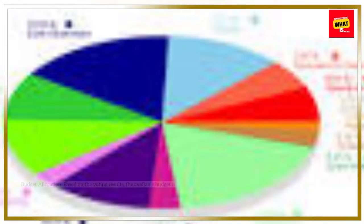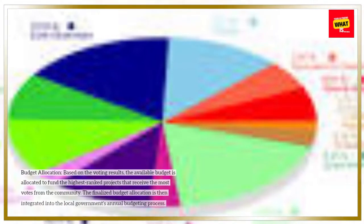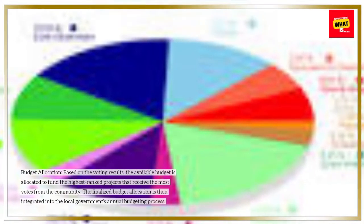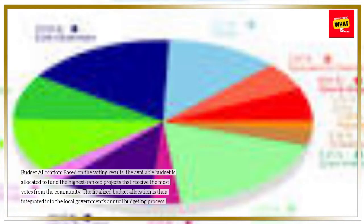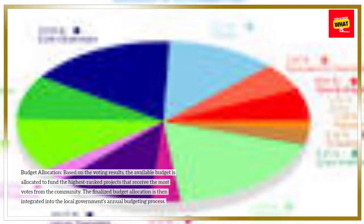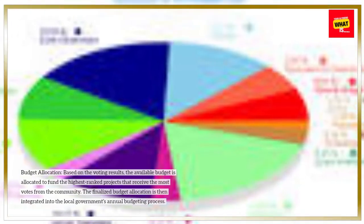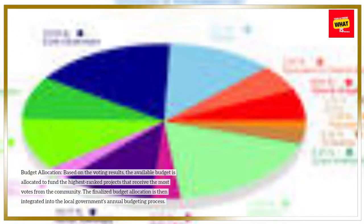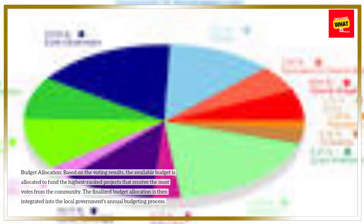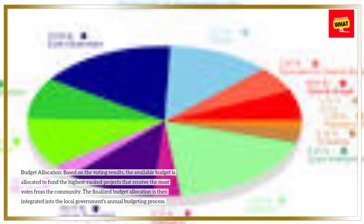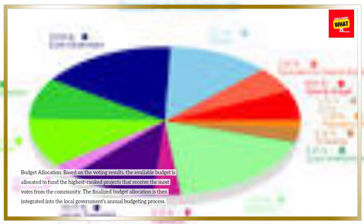Budget allocation. Based on the voting results, the available budget is allocated to fund the highest-ranked projects that receive the most votes from the community. The finalized budget allocation is then integrated into the local government's annual budgeting process.